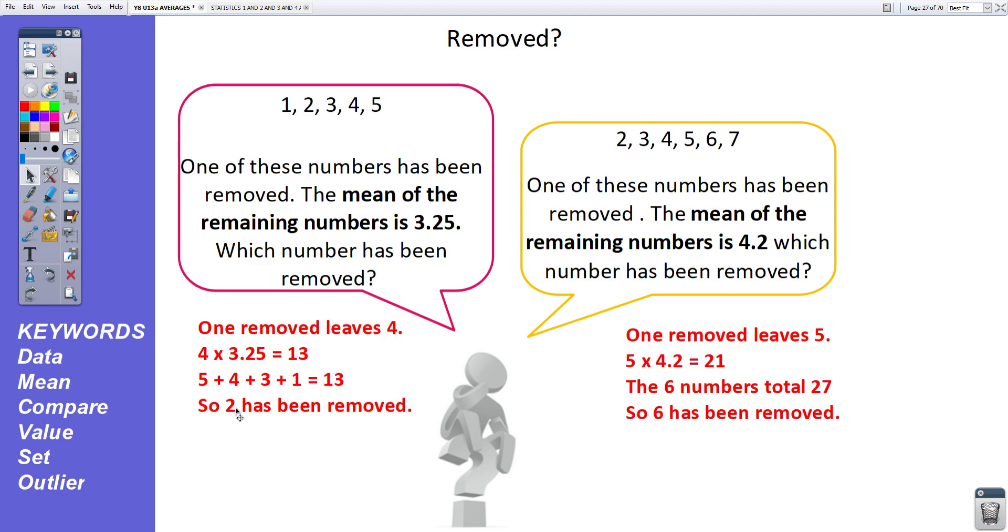Okay, we'll have a look at two different ways of answering these questions. The one on the left, very basic. One of these numbers has been removed. The mean of the remaining numbers is 3.25. Which number has been removed? Well, one removed will leave four numbers. 4 times 3.25 is 13. So in other words, the total of the four remaining numbers must be 13. And it's very easy to see that 5, add 4, add 3, add 1 is 13. So the number 2 has been removed. That's a really basic question.